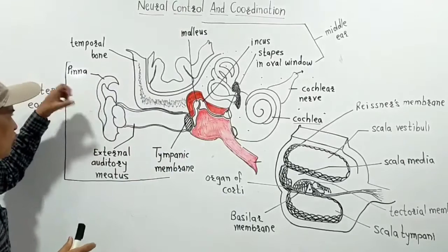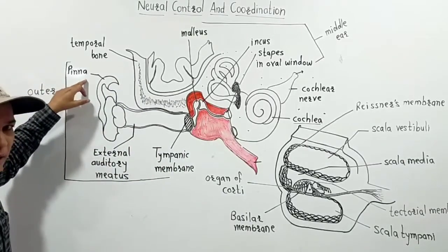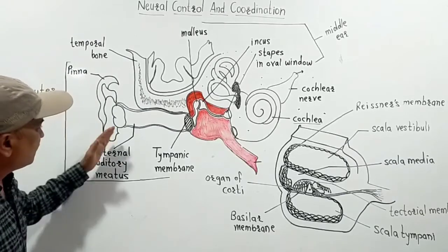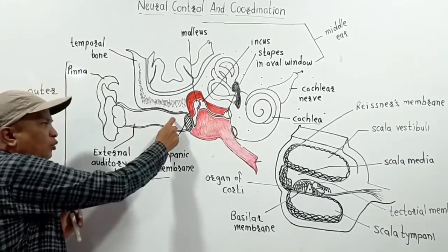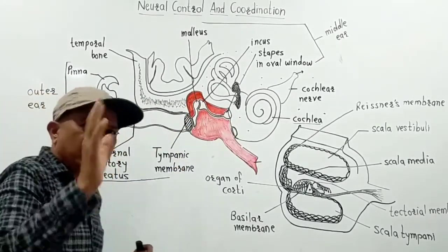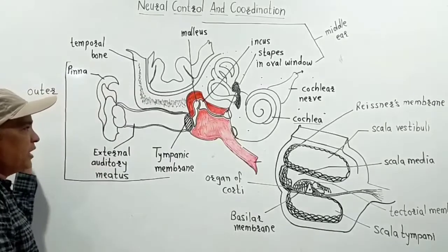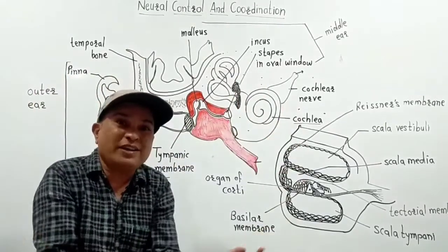Whatever sound is produced, these sound waves are received by the pinna, then transmitted from the external auditory meatus. And these sound waves strike on the tympanic membrane. As soon as the sound waves strike the tympanic membrane, the tympanic membrane is also called the ear drum.